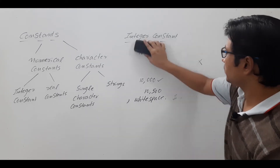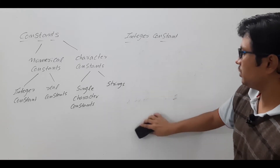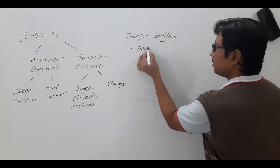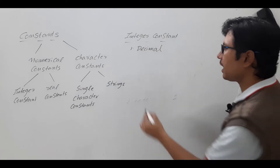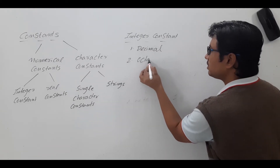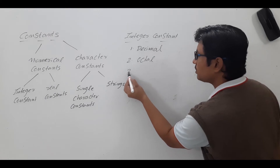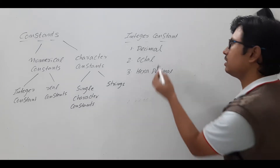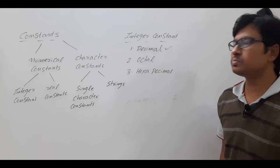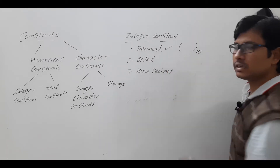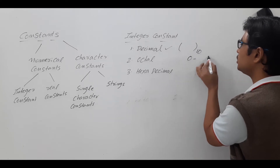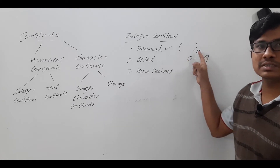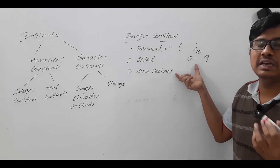Now, within integer constants we have three types: decimal constants, octal integer constants, and hexadecimal constants. Whatever we discussed so far is a decimal constant because the decimal number system is base 10, meaning you have digits from 0 to 9. The minimum digit is 0 and the maximum digit is 9. I have discussed these number systems in detail in my computer organization playlist.